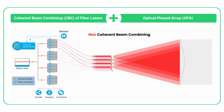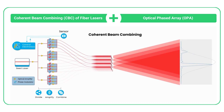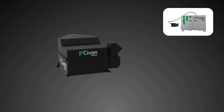Dynamic Beam Laser is based on coherent beam combining of fiber lasers. Coherent beam combining is a method employed in laser technology to merge multiple single-mode laser beams into a larger, coherent beam.